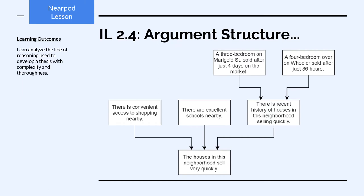If we were to combine the two arguments we looked at together, it might look something like this: the houses in this neighborhood sell very quickly because there's convenient access to shopping and because there are excellent schools nearby. And then the two examples are supported by a premise that there is recent history of houses in this neighborhood selling very quickly, which is itself supported by the two specific examples we've already looked at.